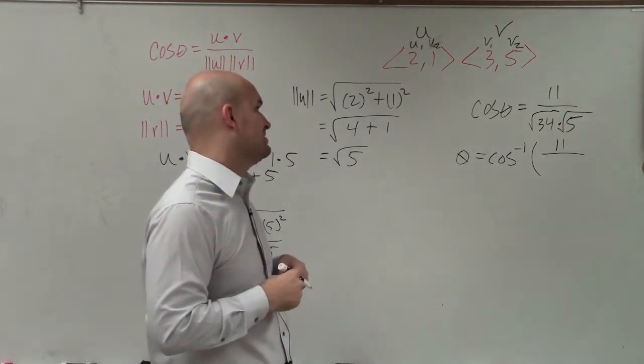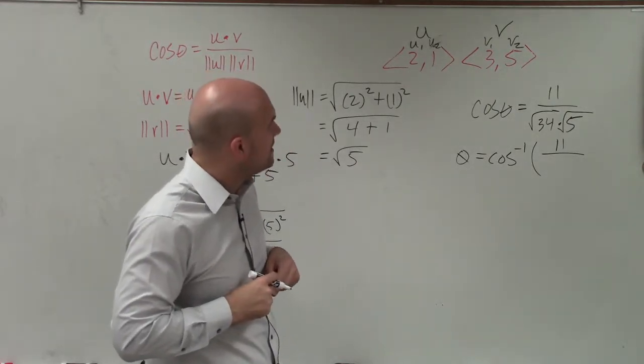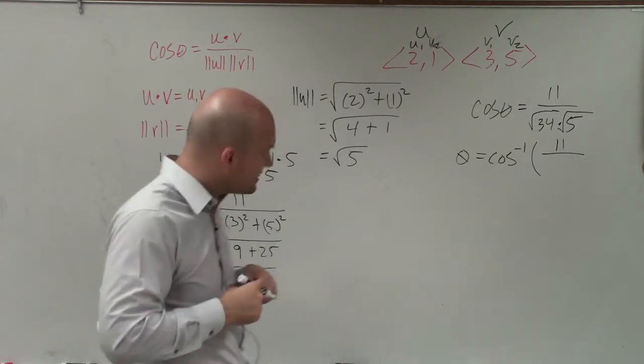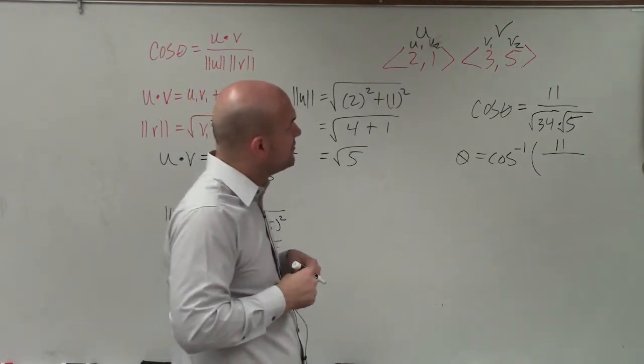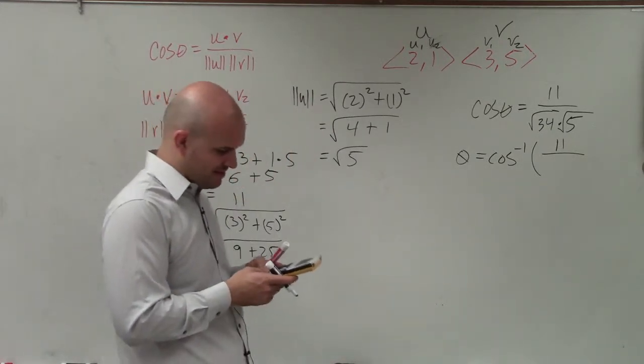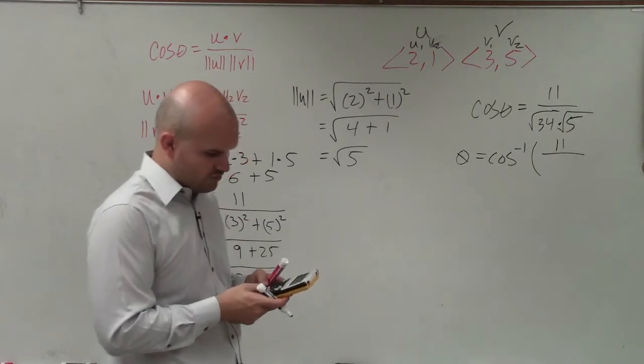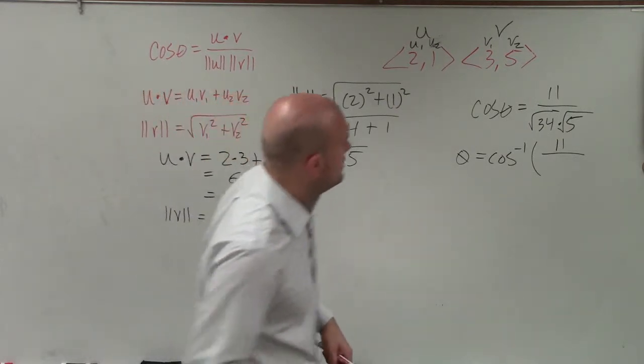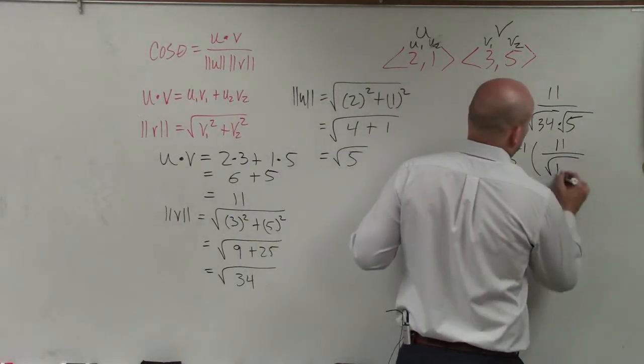Let's see, 34 times 5, that's going to be 68, 136, 40, 170. Let me just double check my math. 34 times 5, 170. Good job. Divided by the square root of 170.